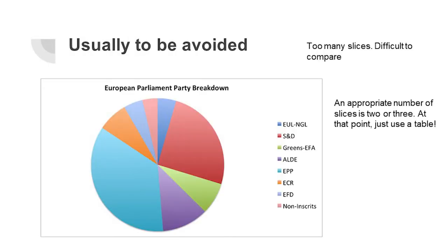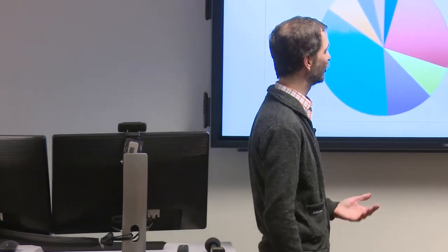Pie charts — there's honestly never really a great time to use one. The problem with a pie chart is that if you have more than basically two slices of pie, it's too difficult to read and compare, so you're better off not using it. And if you only have two or three pieces, you're better off just showing a small table. There's really just no great reason to use a pie chart.